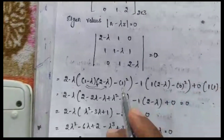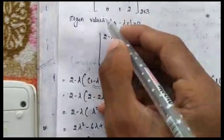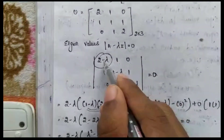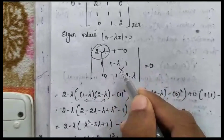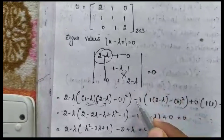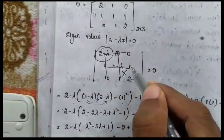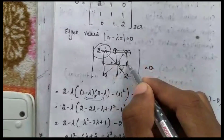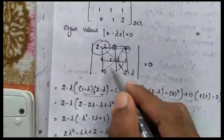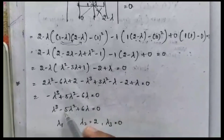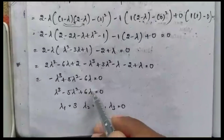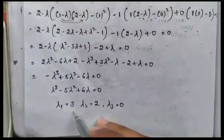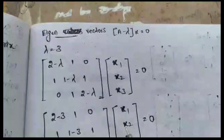We find the eigenvalues for this 3×3 matrix by solving det(A − λI) = 0, giving: |2−λ, 1, 0; 1, 1−λ, 0; 1, 2, −λ| = 0. Expanding this determinant we get a degree-3 polynomial. Substituting into Casio, we get the lambda values: λ = 3, 2, and 0.